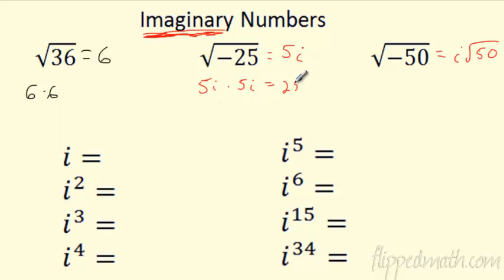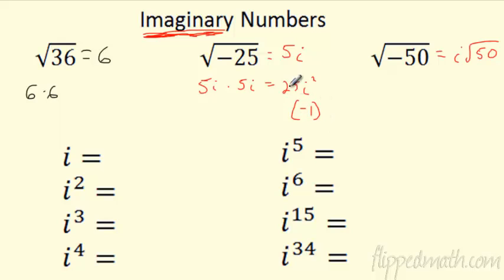5 times 5 is 25. What is i times i? Well, i times i is i squared. And in this case, we want that to be negative. Here's the magic of it all: i squared is negative 1. That's what gives us this whole idea of 25 times negative 1 equaling negative 25. i squared is negative 1 — that's the key to imaginary numbers.